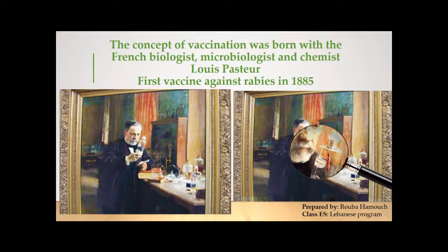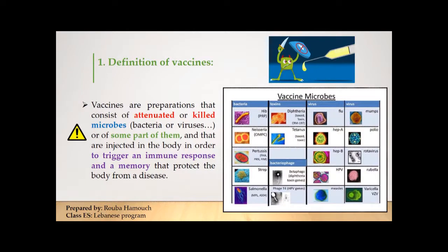The concept of vaccination was born with the French biologist, microbiologist and chemist Louis Pasteur, who discovered the first vaccine against rabies in 1885. As a definition, vaccines are preparations that consist of either attenuated — which means harmless — or killed microbes, bacteria or viruses, or of some part of microbes. The vaccine is injected into the body in order to trigger an immune response to fight against the microbe.